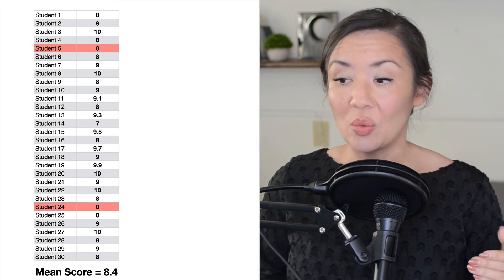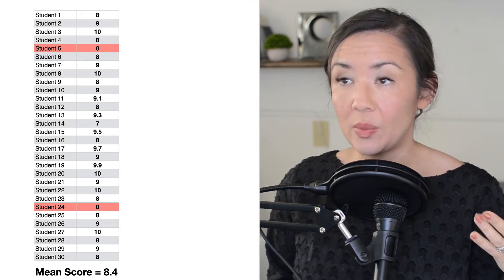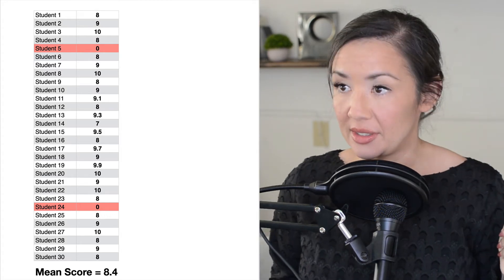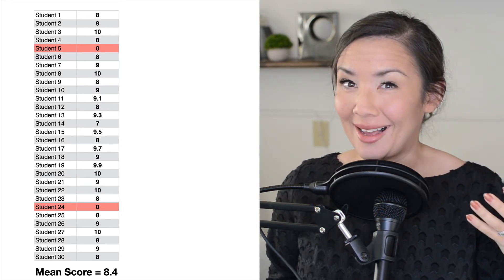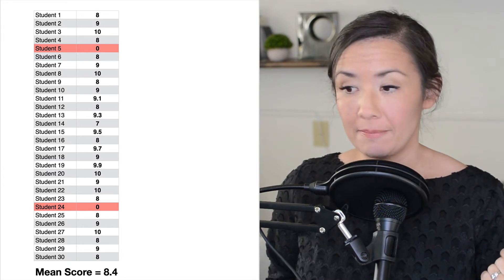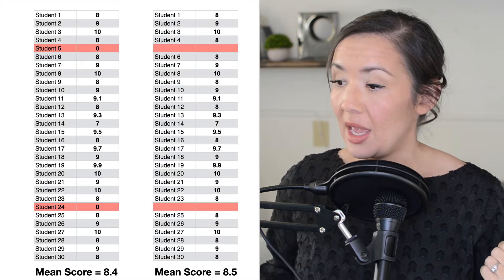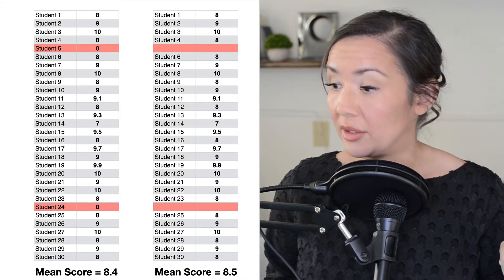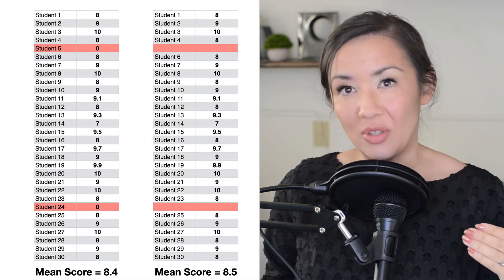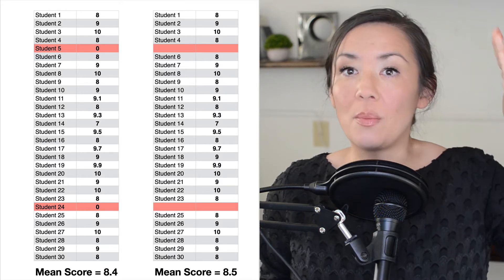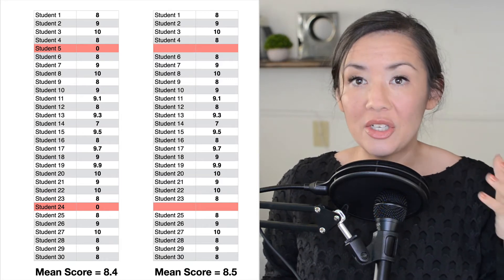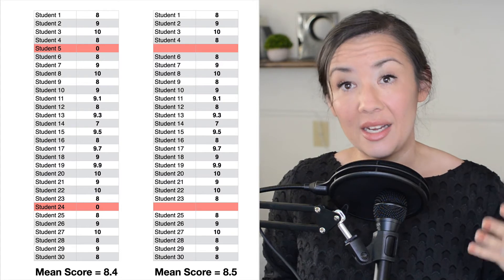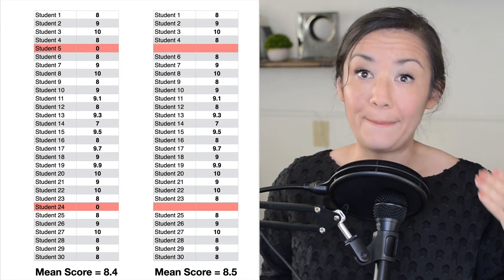Now if we look at an example where 30 students submitted their scores, two students gave zeros — maybe they got a bad grade on their final and hated the class — but most people really loved it. In this case, my average score would be an 8.4. If we remove those two students, the score only goes up by 0.1 points. There's much less influence from those two outliers when more people submit scores, because with a larger population, extreme values have less impact on the overall mean.